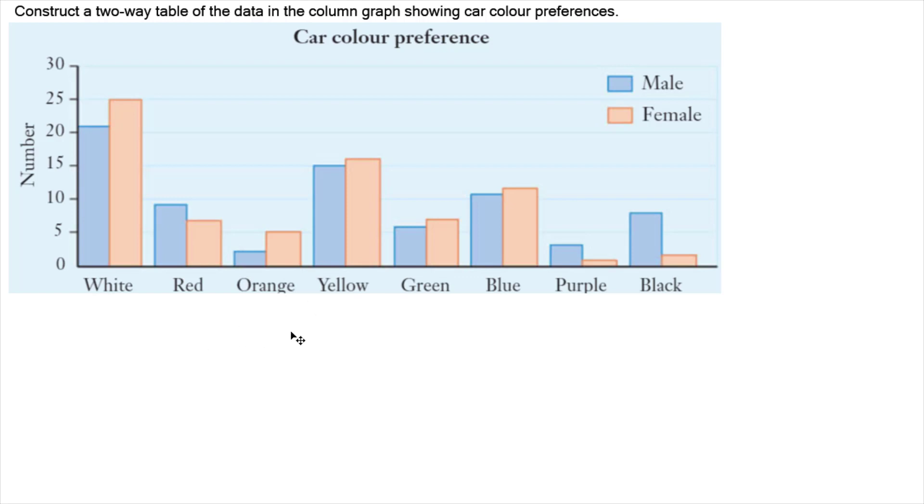So my two-way table is going to start off with our gender across the top, and the reason I'm doing gender across the top is purely because there's only two options, so my table is not going to be terribly wide.